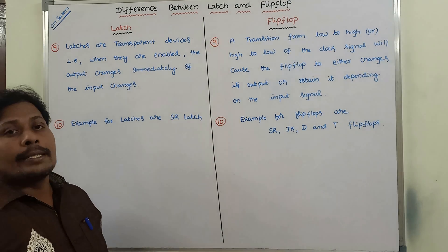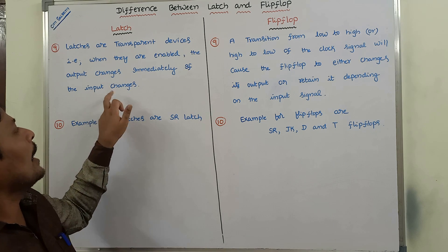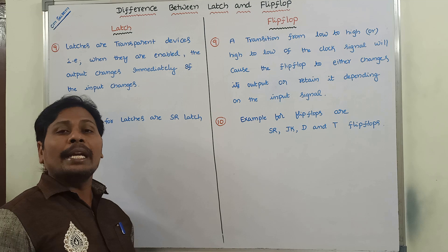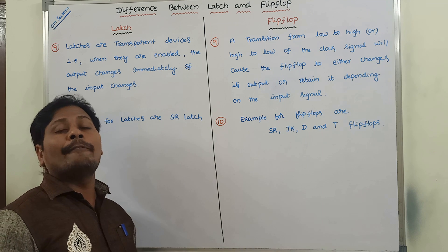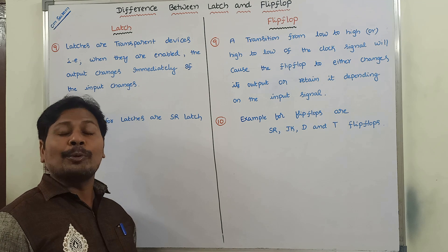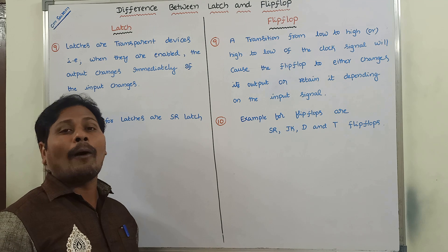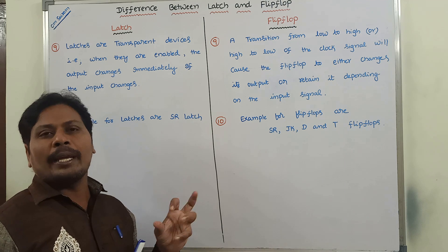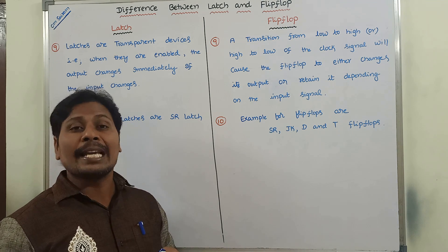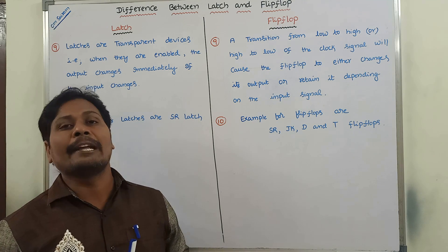Next point: latches are transparent devices. That is, when they are enabled, the output changes immediately if the input changes. In the case of latches, whenever we apply the input, the output immediately changes when the latch is enabled. So whenever the input is changed, the output is also changed immediately — hence we call latches transparent devices.